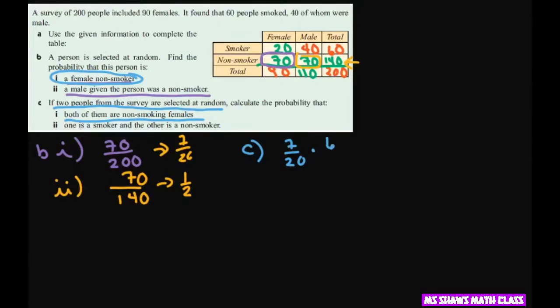So once the first one's chosen, the next one would be 6 out of 19. So whatever that is, that's going to be 42, what's 20 times 19. So that would be 42 divided by 380.